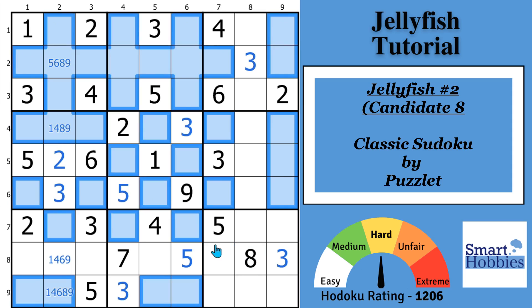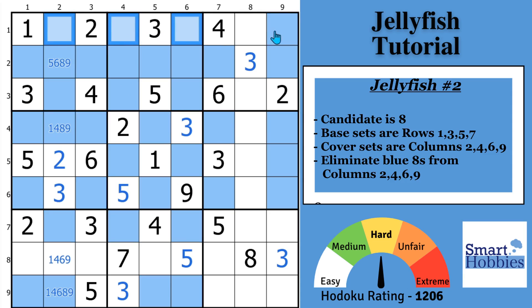Alright. So that's where all the 8s can be. This time I'm going to go by the rows to show you that you can also do a jellyfish using rows as our base sets. So let's look here in row 1. Look here in row 3. Here in row 5. And row 7. You'll notice that the 8s are restricted to the same 4 columns. And those rows are restricted to columns 2, 4, 6, and 9. We have found ourselves another Sudoku jellyfish.